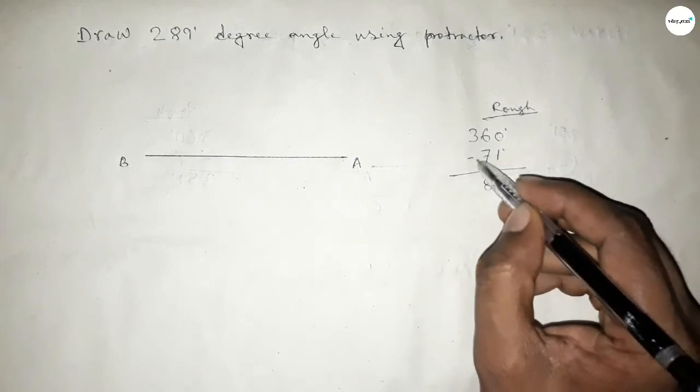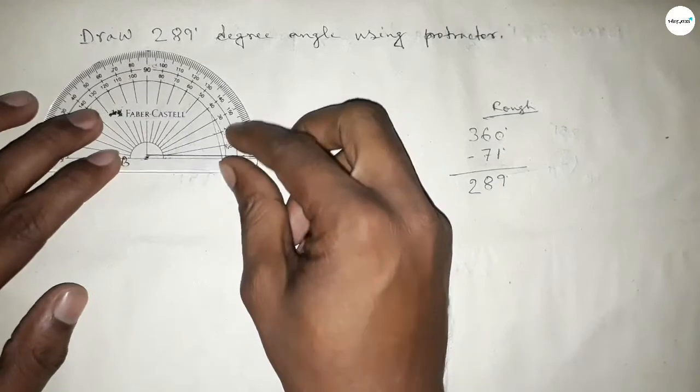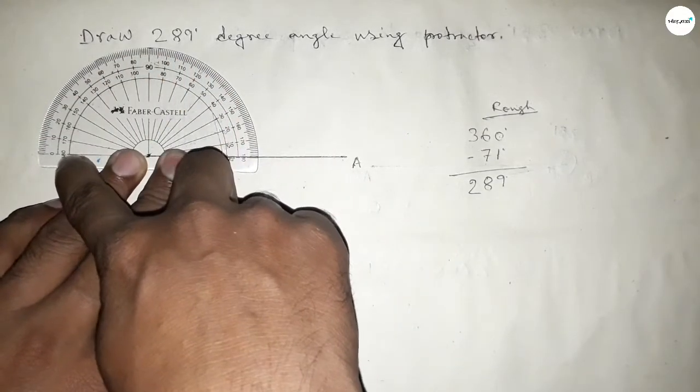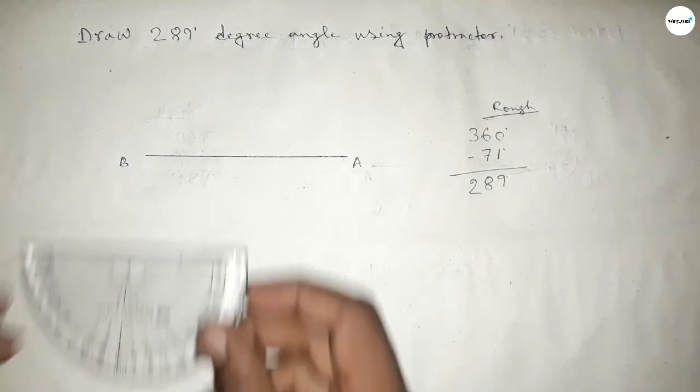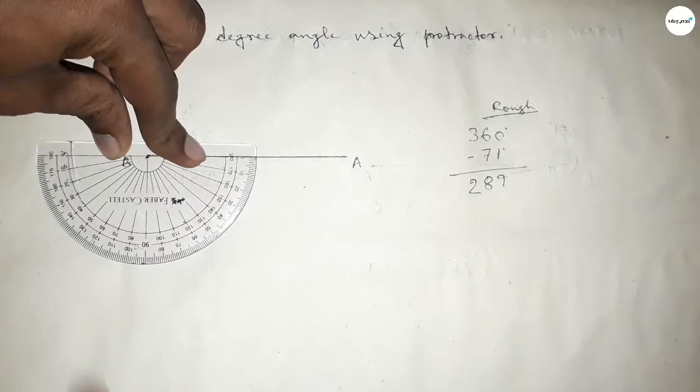First we have to count 360 degree angle on point B. So putting the protractor on point B and counting the angle, this is 180 degrees. Plus, putting the protractor on point B by this way and counting the angle, so this is total 360 degree angle.